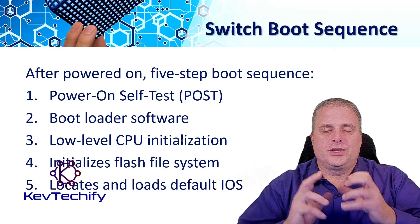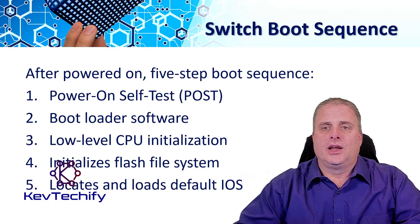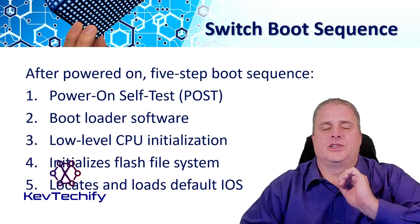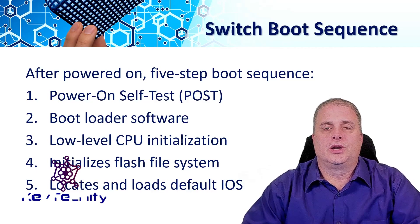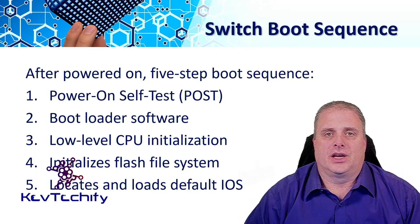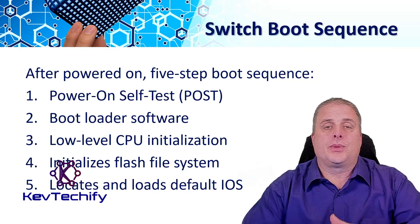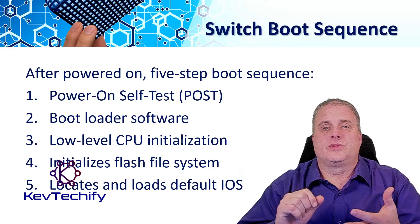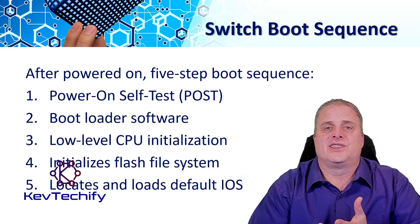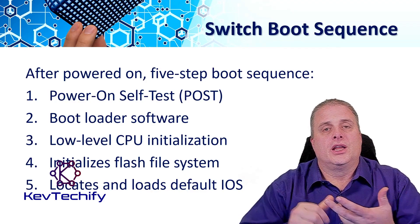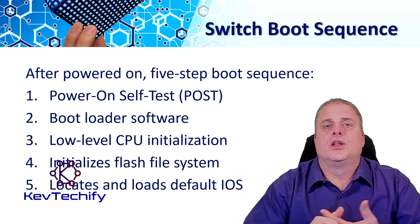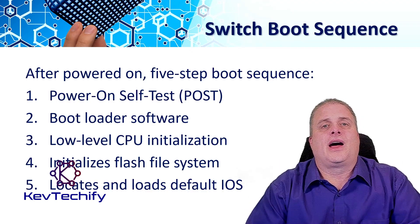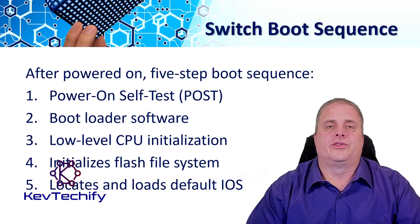When you first turn on a switch, after it's powered on, it goes through five steps in the boot sequence. The first one is power-on self-test. During the power-on self-test, it checks the CPU subsystems and initializes the CPU. It looks at the RAM, looks at the flash, and does a basic inventory of all the hardware in the device.